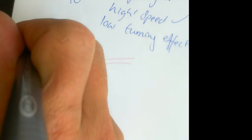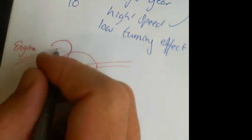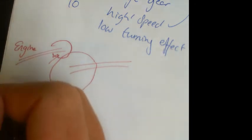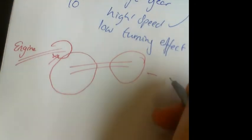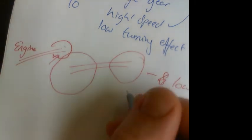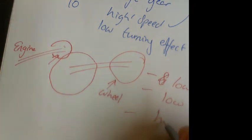If we imagine it the other way around, with the engine connected to a small cog that then connects up to a big cog, each time the small cog goes around ten times, the big cog goes around once. That means the engine will be turning over ten times faster than the wheel. This is known as a low gear, because the driving cog is small, which gives you a low speed but a very high turning effect.